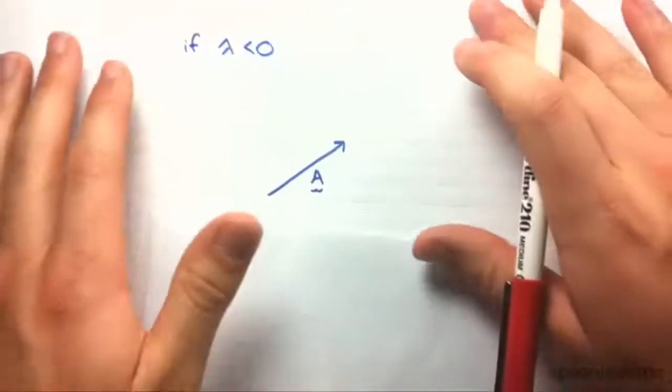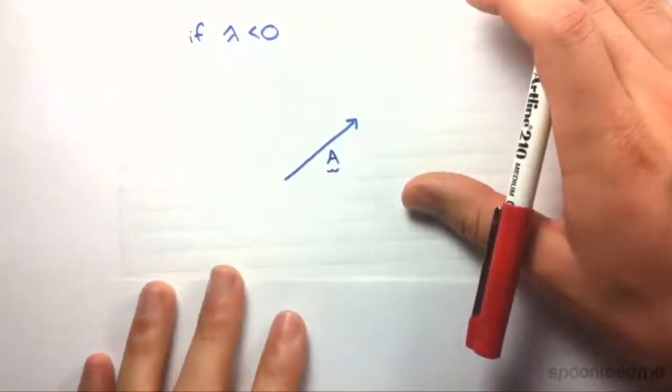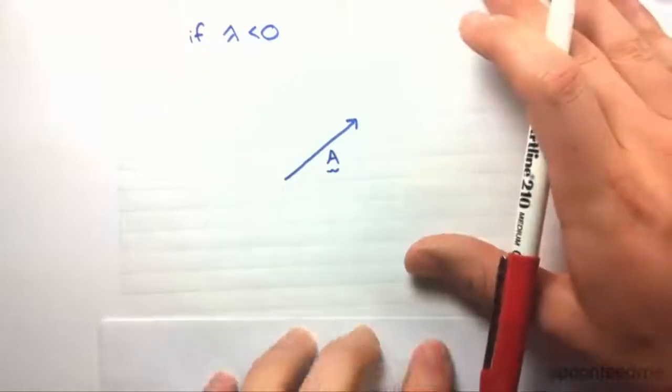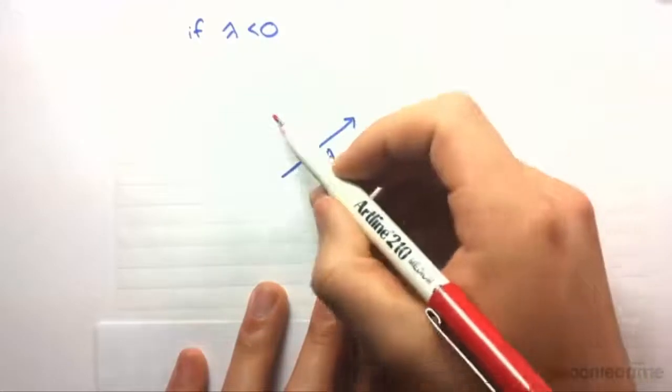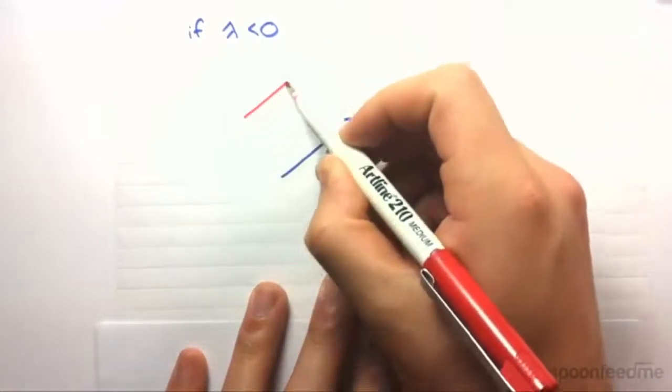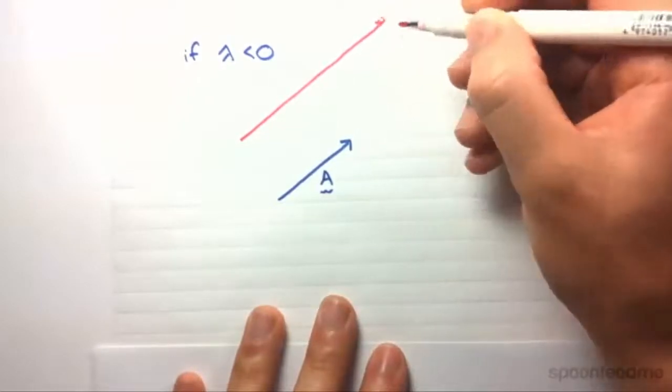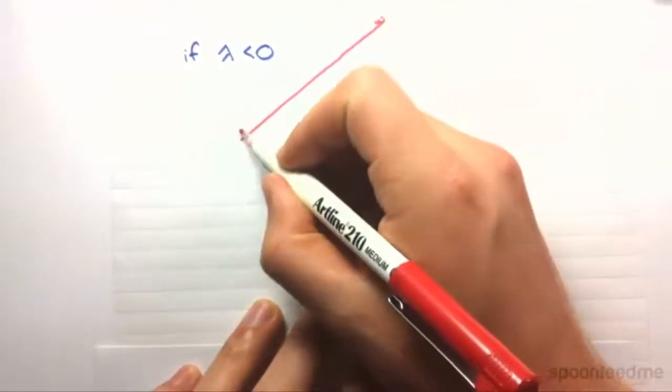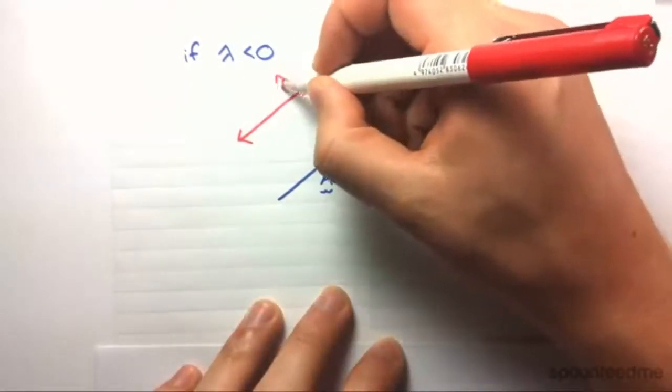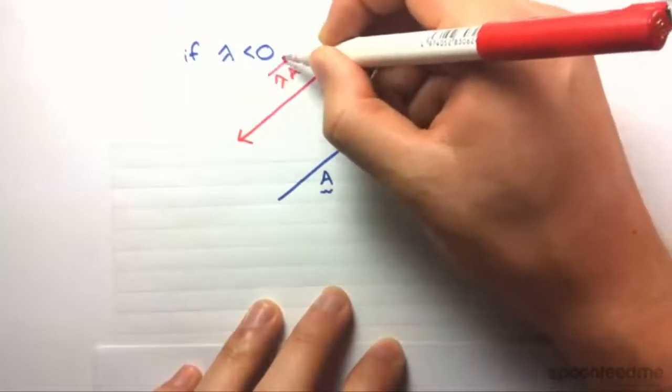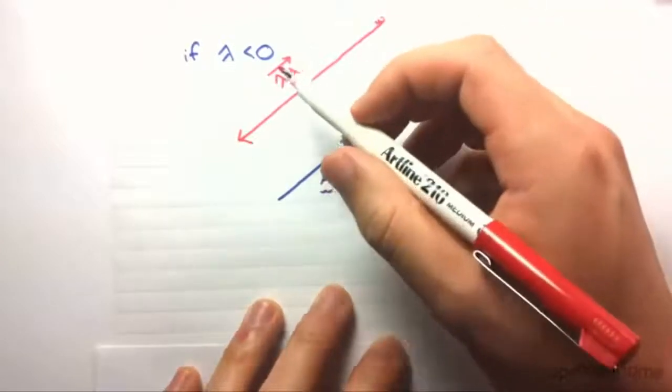When lambda is less than zero, something does happen to the direction. Rather than, the magnitude is still multiplied by the scalar. So we still end up with the same length of line. Only difference is this time the direction is reversed because lambda is actually negative. So lambda is less than zero. Only difference is the direction is reversed.